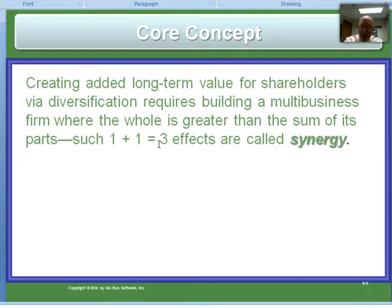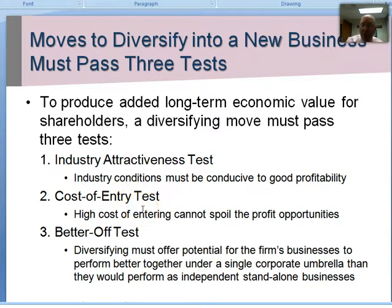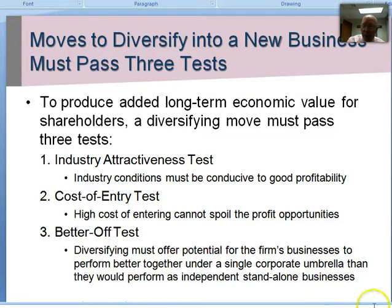One firm plus one firm joined together gets great savings. For the test, remember one plus one equals three — in reality, one plus one is greater than two, and that's the essence of synergy. The textbook does a great job pointing out three tests a company should look into: the industry attractiveness test (is it profitable?), the cost of entry test (this gets into mergers and acquisitions and the penalty of paying too high a premium), and the better off test. You can't make a case to diversify into a business unless it passes the better off test — we're worth more together than we would be separately.